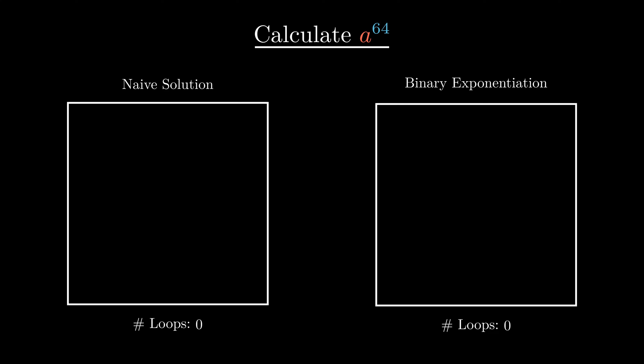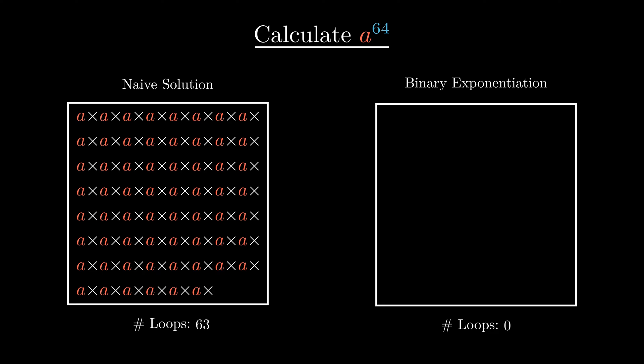The key to this algorithm is doubling. Instead of multiplying by 1 a at a time, we double the number of a's in each iteration.